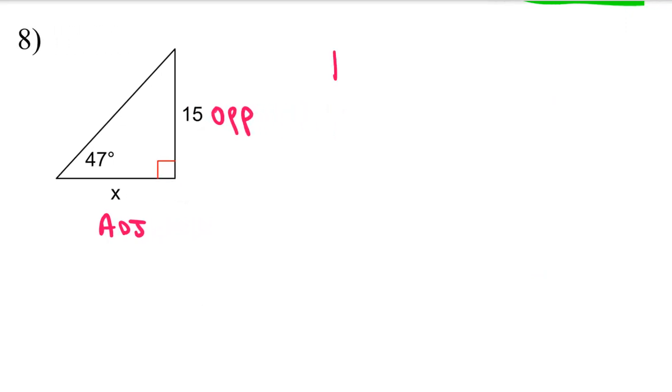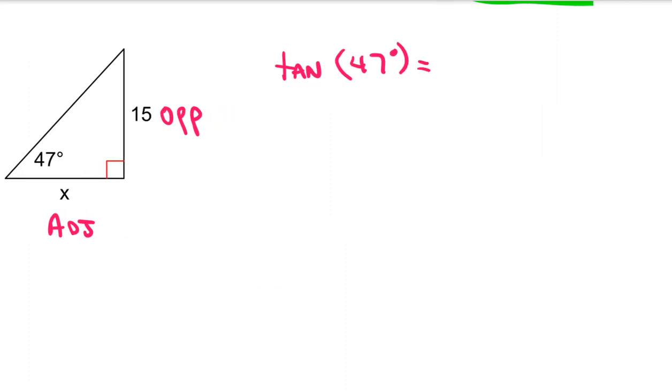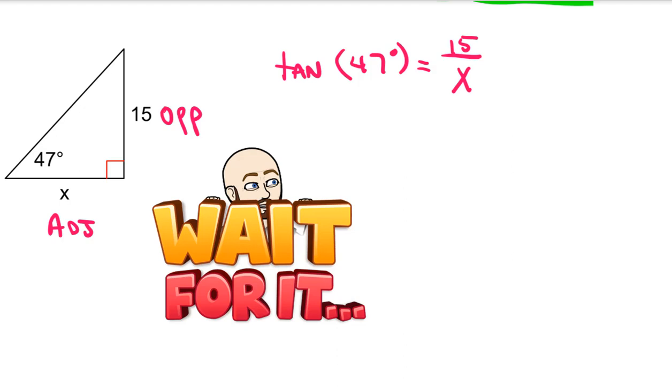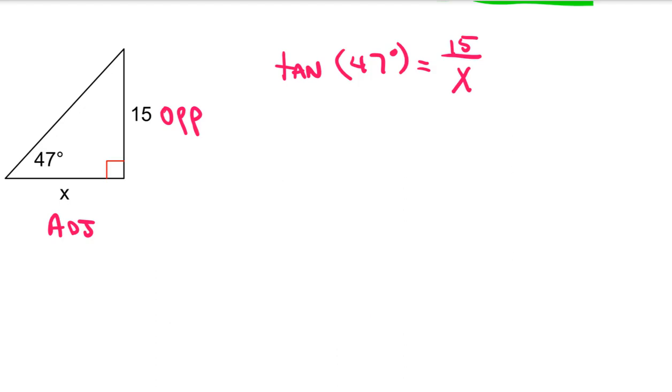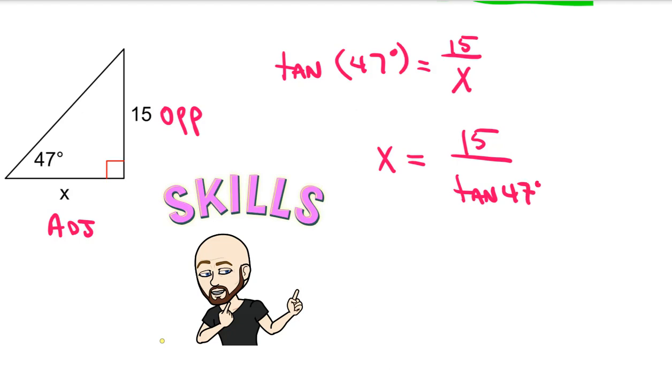So when I set this up, my very first line is going to be to write down tangent of 47 degrees, because I know that's the angle that I'm given. And then the opposite side, of course we know that to be 15, and the adjacent side is x. Now when your variable is on the bottom, I call this move the switch. So we're going to do two moves at once. We're going to make it x equals 15 over tangent of 47. So that's what I call the switch.